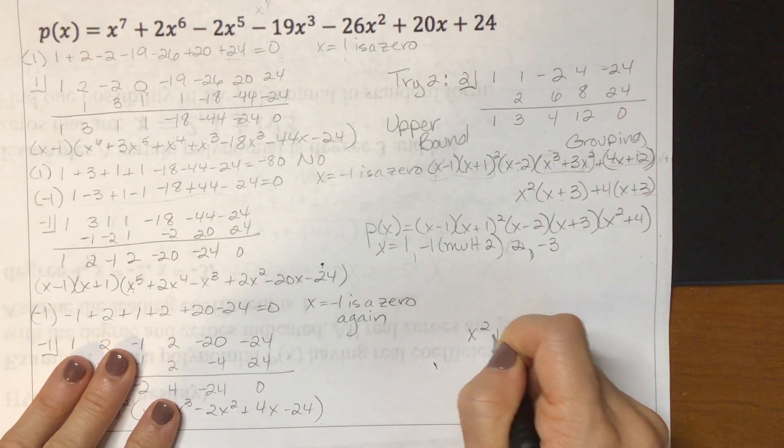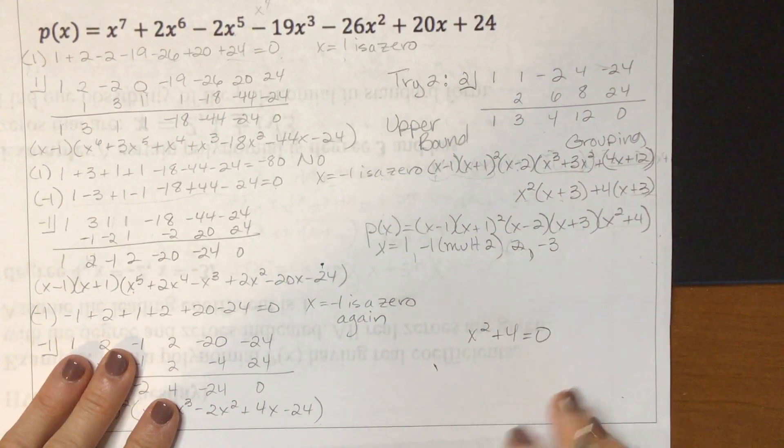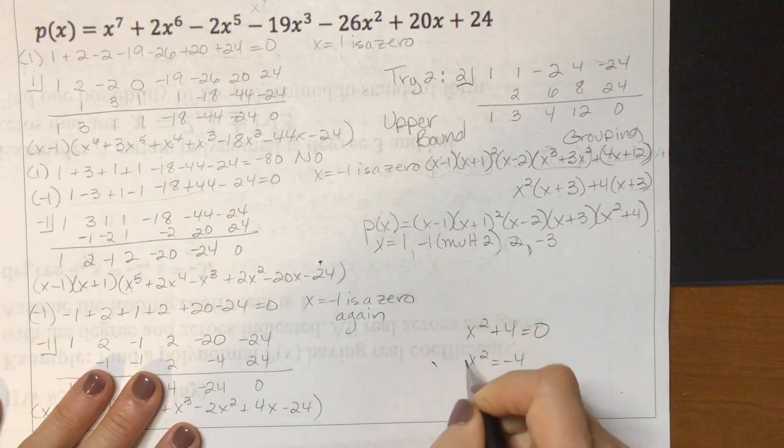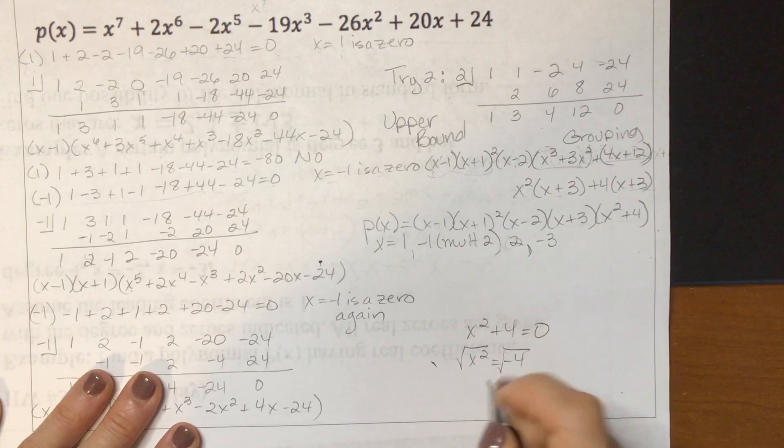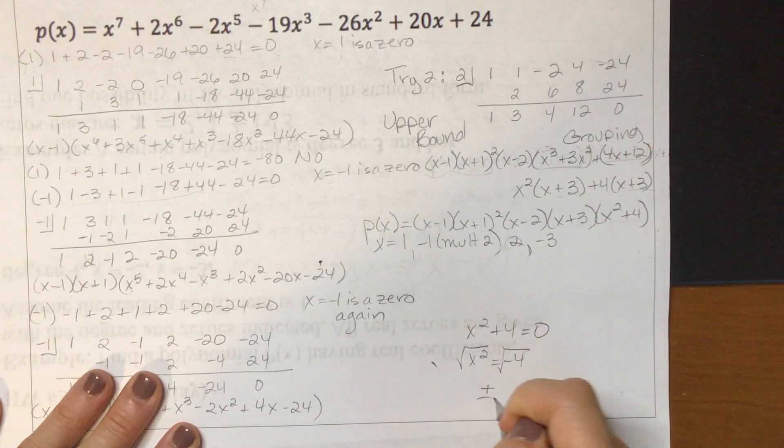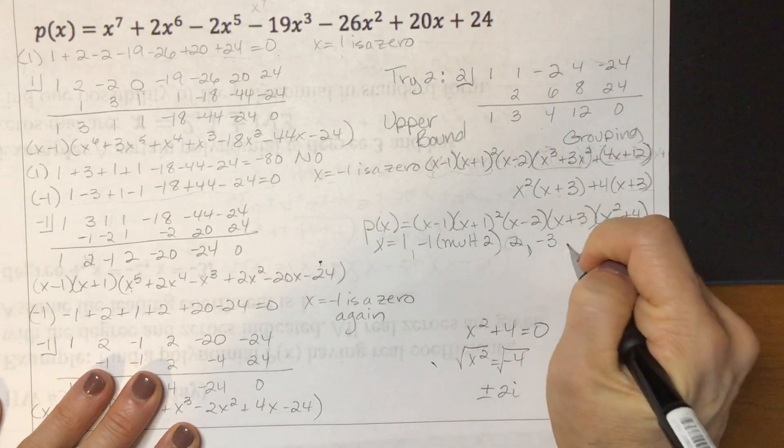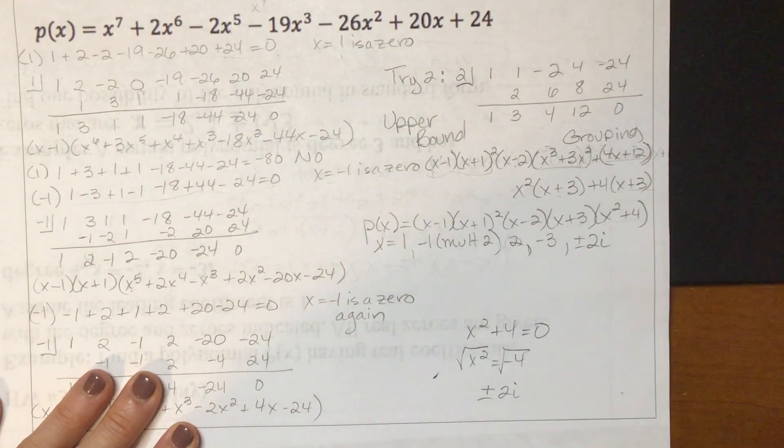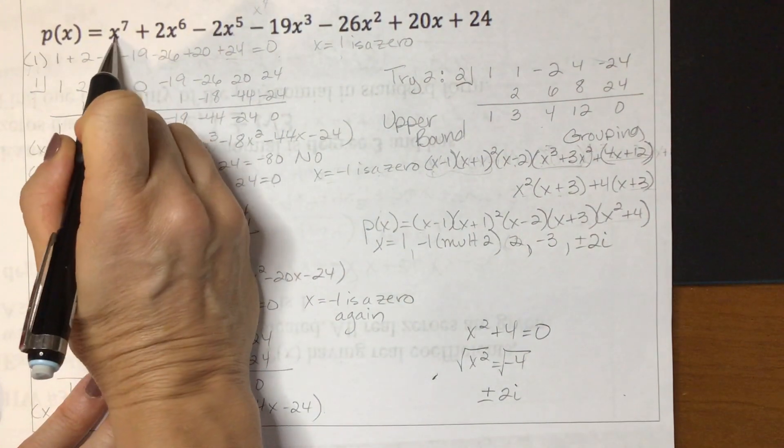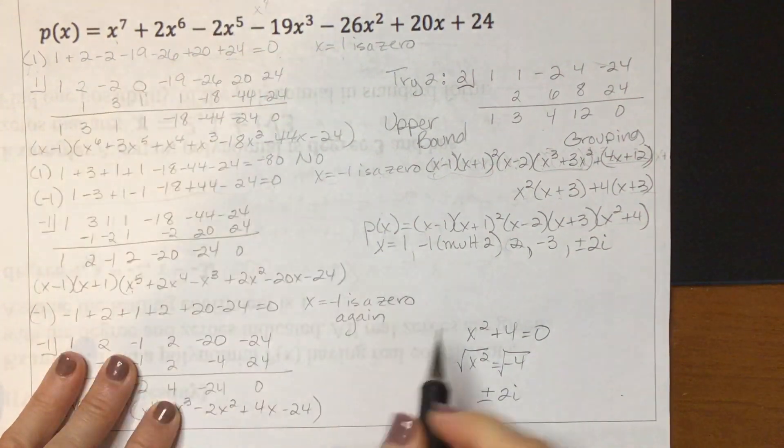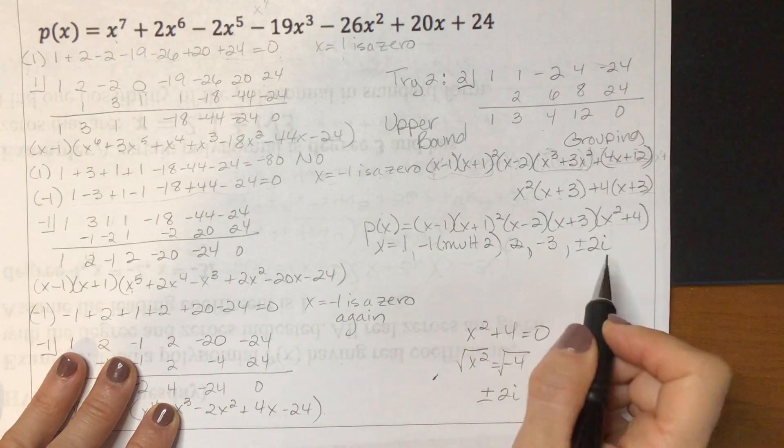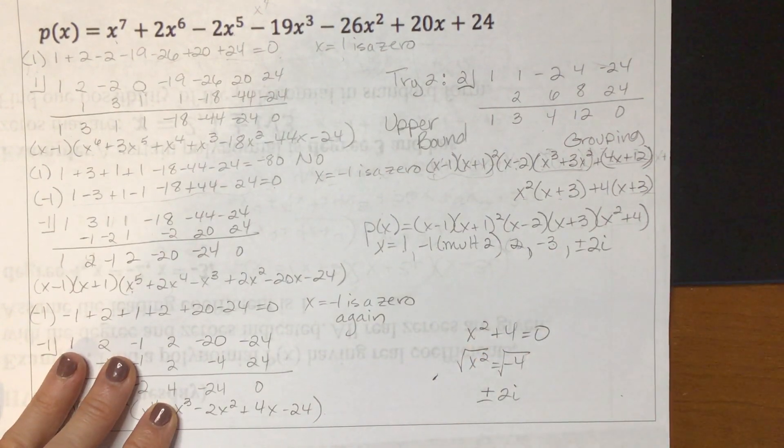And if I set x squared plus 4 equal to zero, I get x squared equals negative 4. And when I square root, I get plus or minus 2i. Now I should have seven zeros because my degree was seven. So here's 1, 2, 3, 4, 5, 6, 7. And that's it.